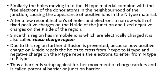After a few recombinations of holes and electrons, a narrow region of fixed positive charges forms on the N-side of the junction and fixed negative charges on the P-side. Since this region has immobile ions which are electrically charged, it is also called the space charge region.